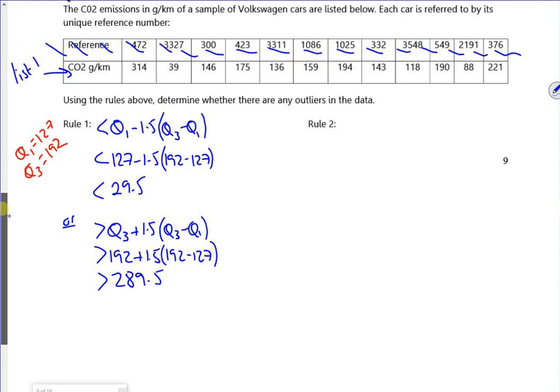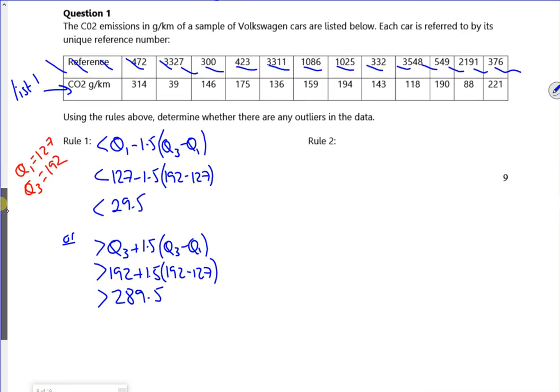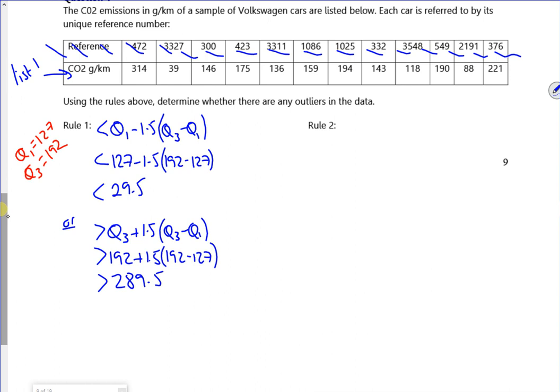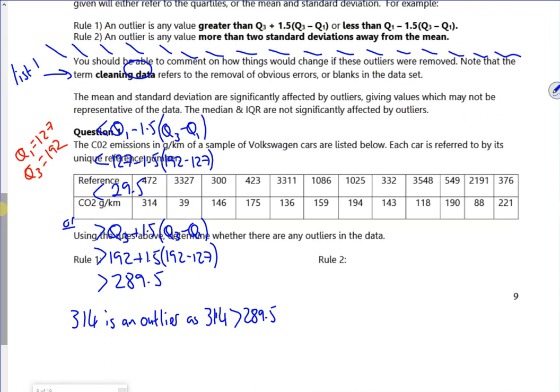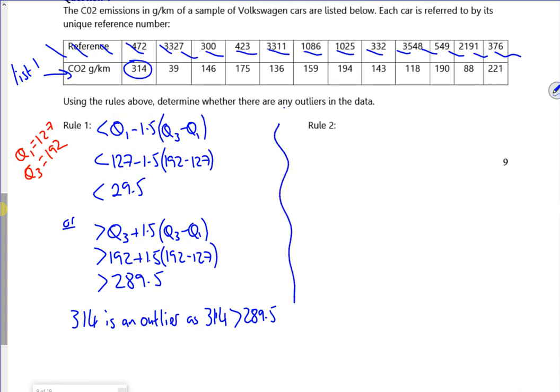So are there any outliers? If you look, there are no numbers below the 29.5, but we have got 314. So 314 is an outlier as 314 is greater than 289.5.